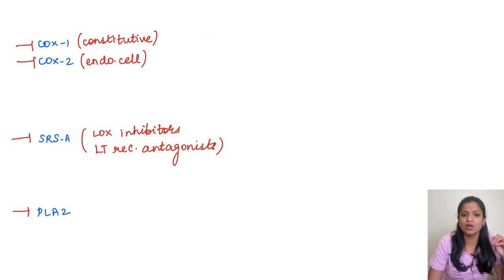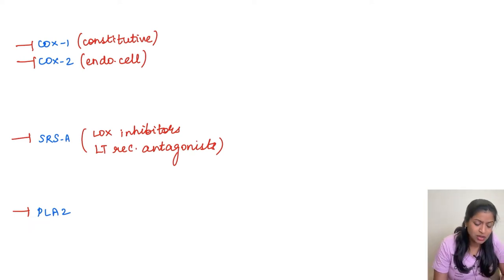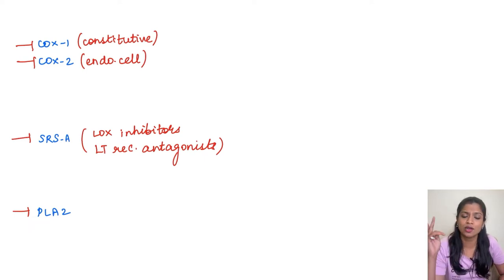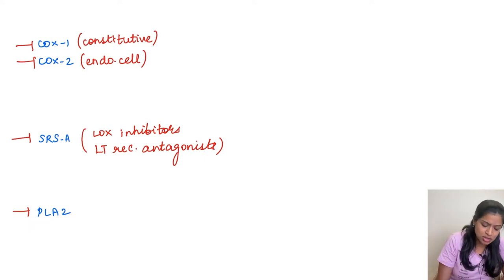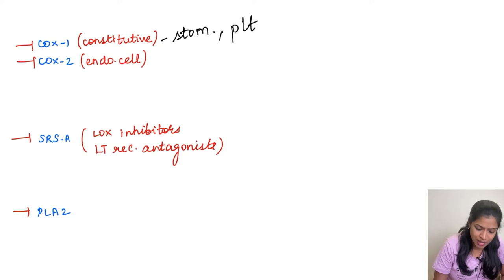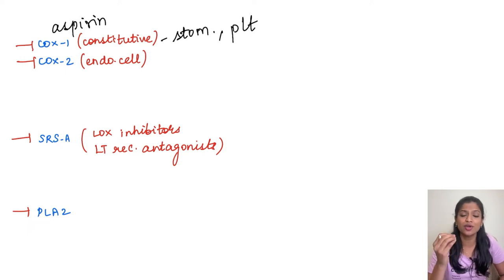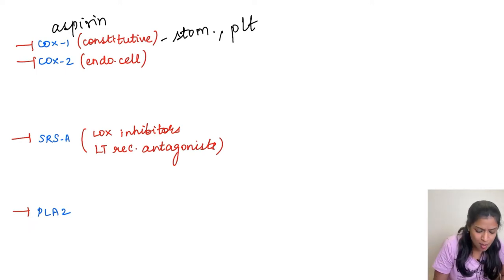If we inhibit any of these enzymes forming inflammatory mediators, inflammation will not proceed. Anti-inflammatory drugs have been developed by inhibiting these enzymes. Cyclooxygenase has two types: COX-1 and COX-2. COX-1 is constitutively active and present in both the stomach and platelets, while COX-2 is present in endothelial cells. If we inhibit COX-1 — for example with aspirin — it inhibits prostaglandin production in the stomach. But prostaglandins are protective in the stomach, preventing peptic ulcers. So inhibiting COX-1 ultimately leads to peptic ulcer disease as a side effect.